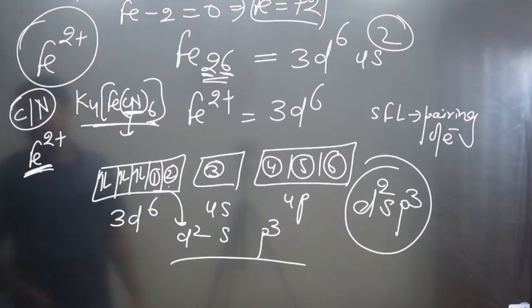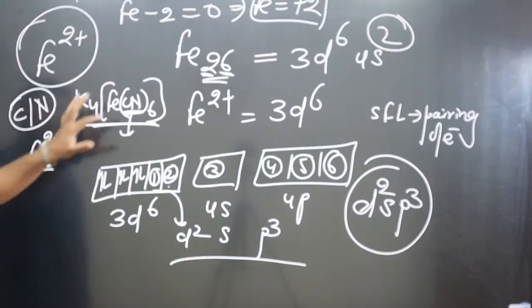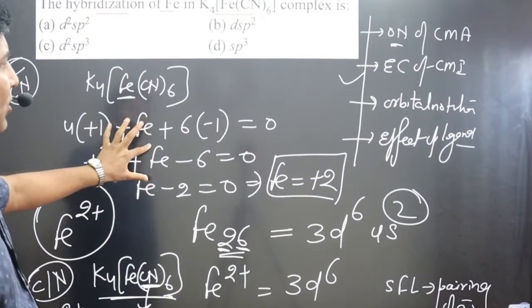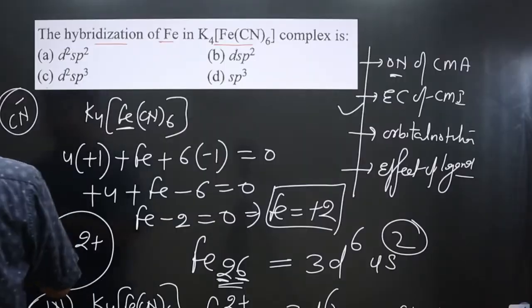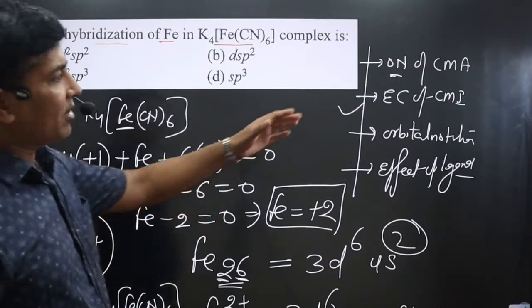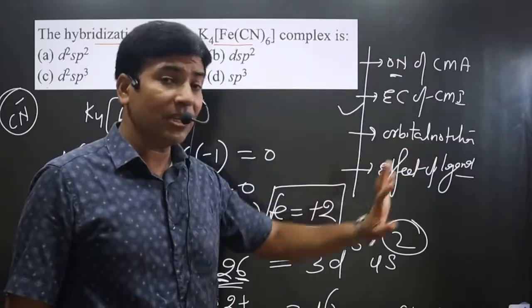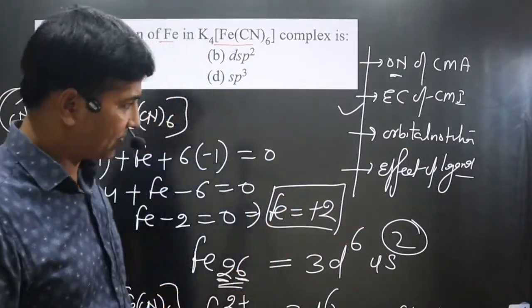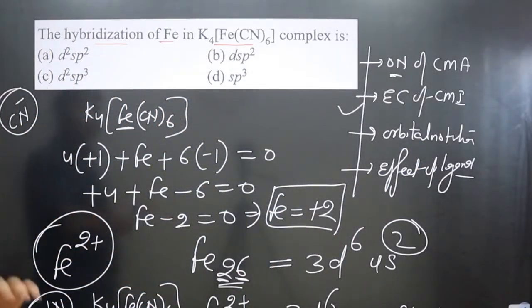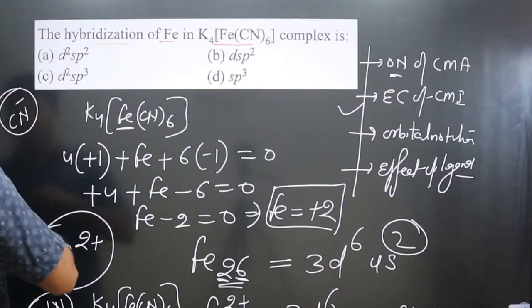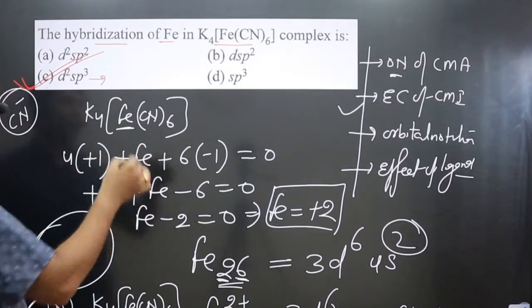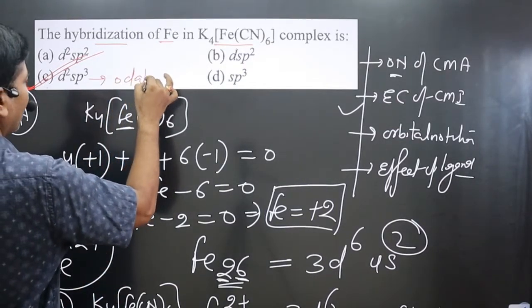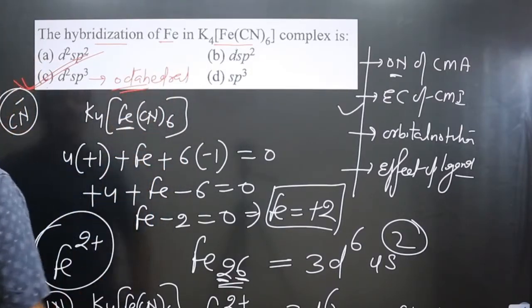So in valence bond theory, the steps are: write the oxidation number, write the electronic configuration, follow orbital notation, and consider the effect of the ligand. In this case, the hybridization is d2sp3. Option C is correct. If asking about geometry, it will be octahedral. If you like this video, please share and subscribe to the channel.